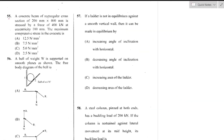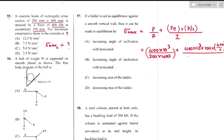Question number 55: A concrete beam of rectangular cross section 200 mm × 400 mm stressed by 400 kN with eccentricity 100 mm. Using the formula with moment of inertia I = bd³/12, the maximum compressive stress in concrete is 12.5 N/mm² — option A is the right answer.